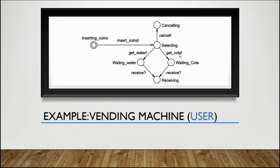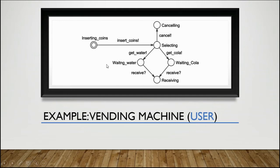The user should select either cancel, get cola, or get water. After that, the user sends a request to the other timed automata — indicated by the exclamation mark, meaning we send the request to the vending machine timed automata. Then the user waits for either the cola or the water. Once the machine sends the product, the user receives it. The user inserts the coins, sending a command to the other timed automata that coins have been inserted.